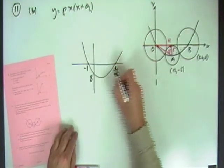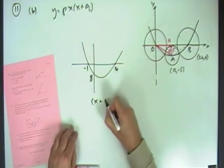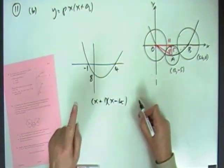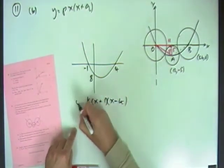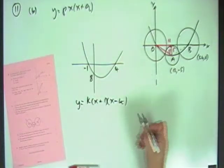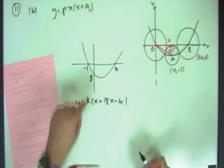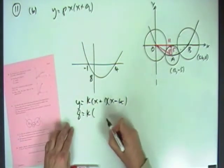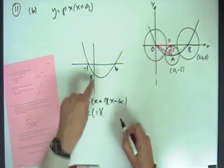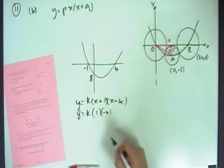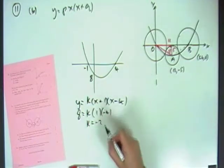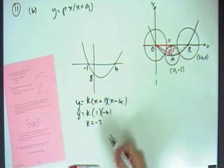If it passes through negative 1 and 4, the factors must have been X plus 1, X minus 4, that would equal to 0, but there might have been a common factor. So you get the equation, Y equals K times that, and then you can find that K by putting this point 0, 8 into it. 8 would be K times, and then that would just be 1, because it's 0, and that would just be negative 4, and that would give you negative 4K, so K would be negative 2, so your equation would be negative 2, bracket, bracket.